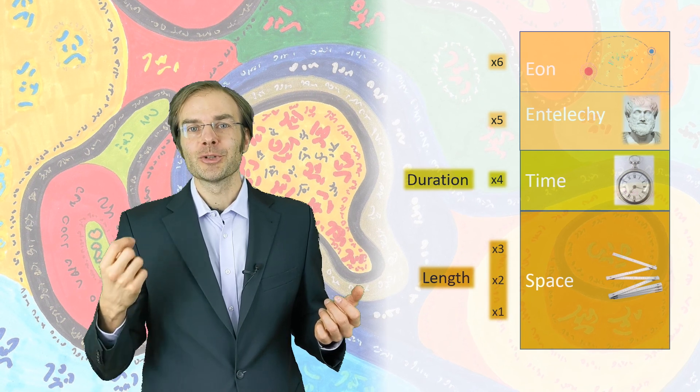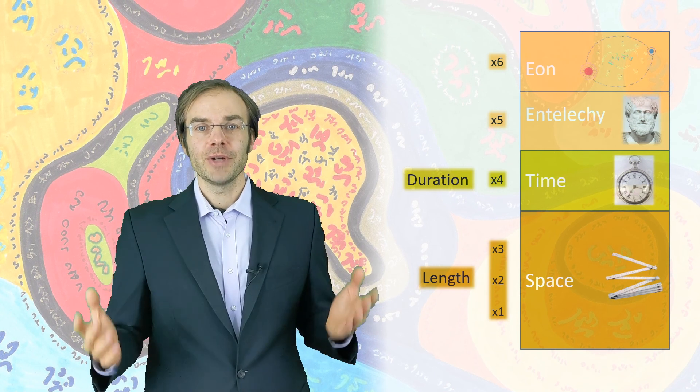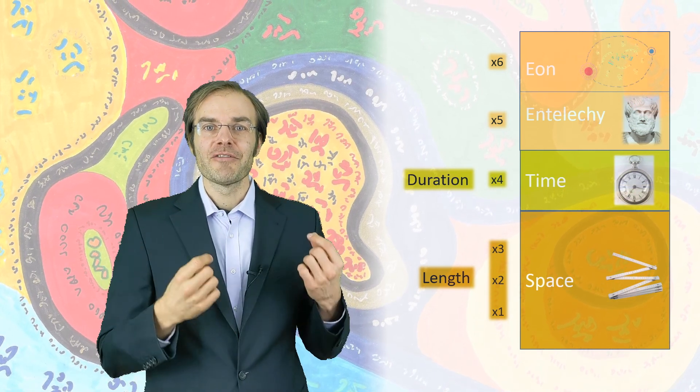So how do we interpret these two additional dimensions? If one, two and three are length, and four is duration, then what kind of scale or concept are five and six?